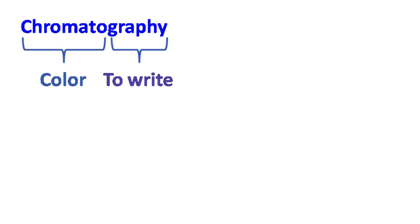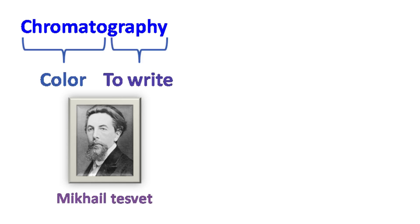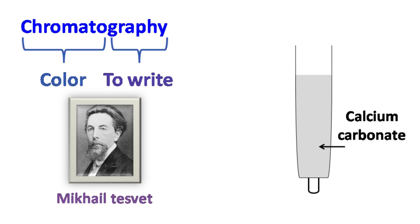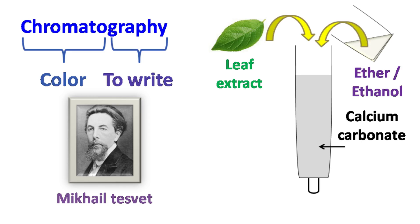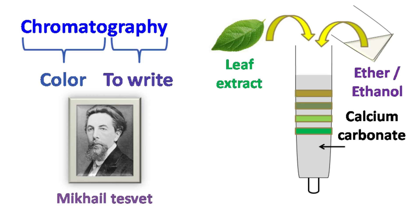Chromatography was first invented by a scientist named Mikhail Tsvet. He designed an experiment in which he packed a column with calcium carbonate, then added extract obtained from crushed leaf along with a mixture of ether and ethanol. He found that as the leaf extract passed down the column, the chlorophyll pigments present in the leaf extract got separated.